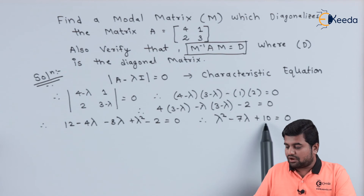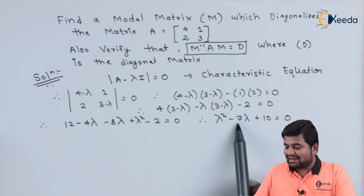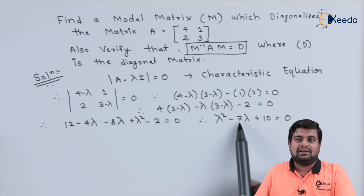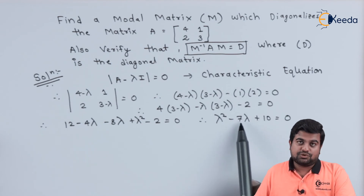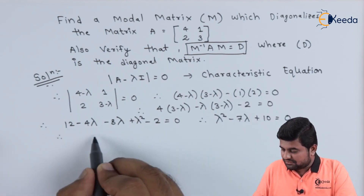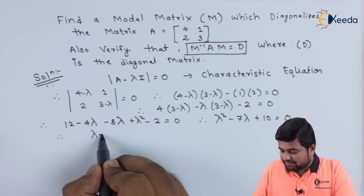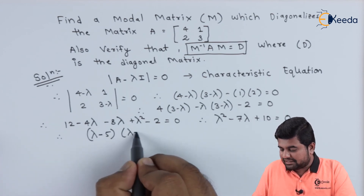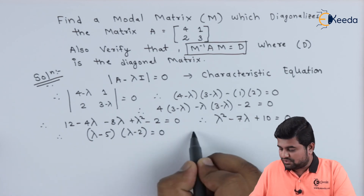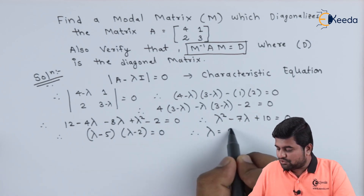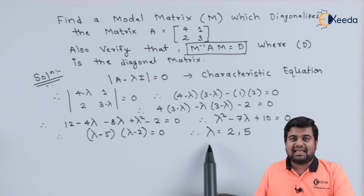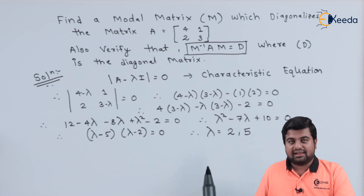We need a product of 10 and a sum of 7, so the two possible solutions are 5 and 2. Therefore, (lambda minus 5)(lambda minus 2) equals zero, giving lambda equals 2 and lambda equals 5. So the eigenvalues are 2 and 5.